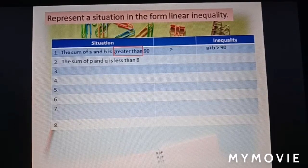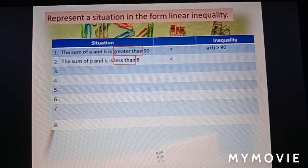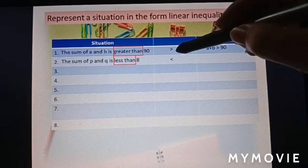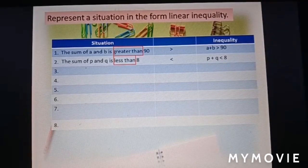The second one: the sum of p and q is less than 8. The keyword is 'less than,' so the symbol is like this, and the inequality is: p plus q less than 8.